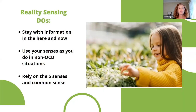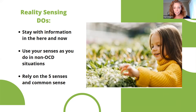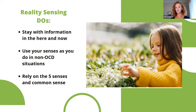Reality sensing do's: when we are reality sensing, we want to stay with information in the here and now. We want to use senses as you do in non-OCD situations and rely on the five senses and common sense — because sometimes it's just facts we know to be true that we are doubting ourselves about. So there's common sense coming into play.